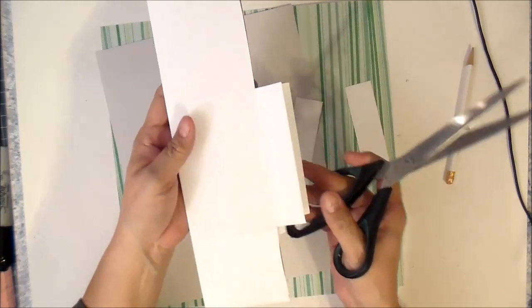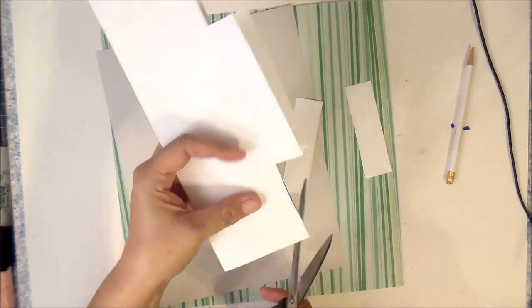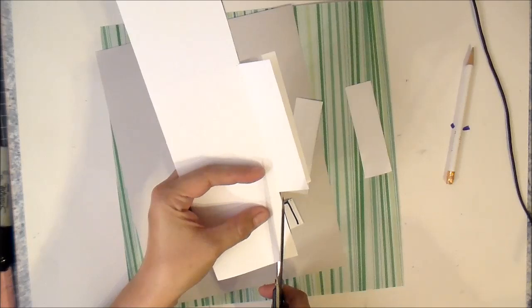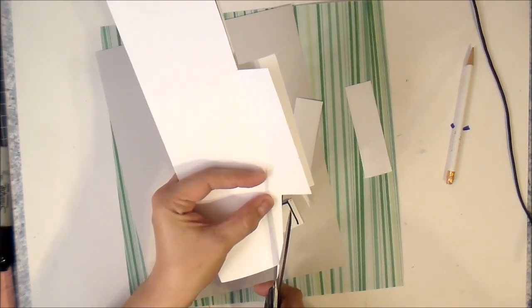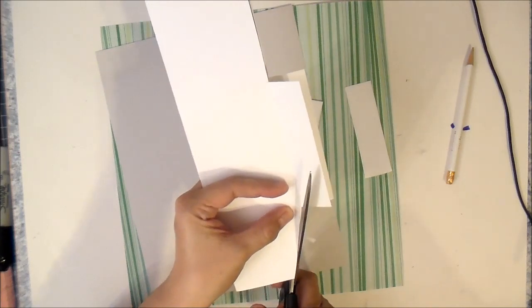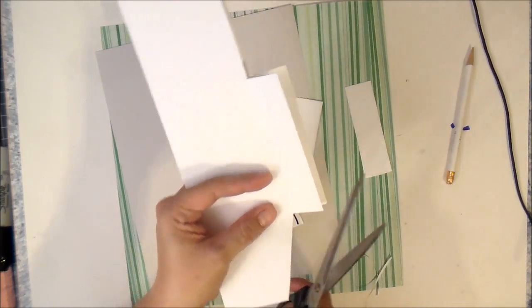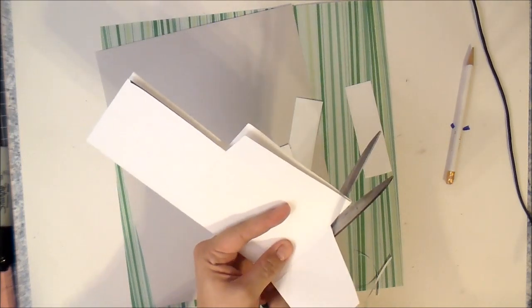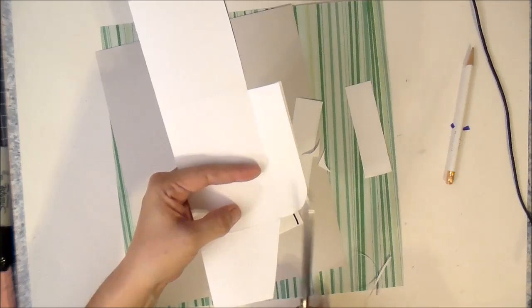So now you have something that looks like this. Now this top part, you're gonna cut off at a slant right there, just like that. And then this part right here on the side, you're gonna round it. You can either use your rounding tool if you have one, or just use your scissors and round it off.